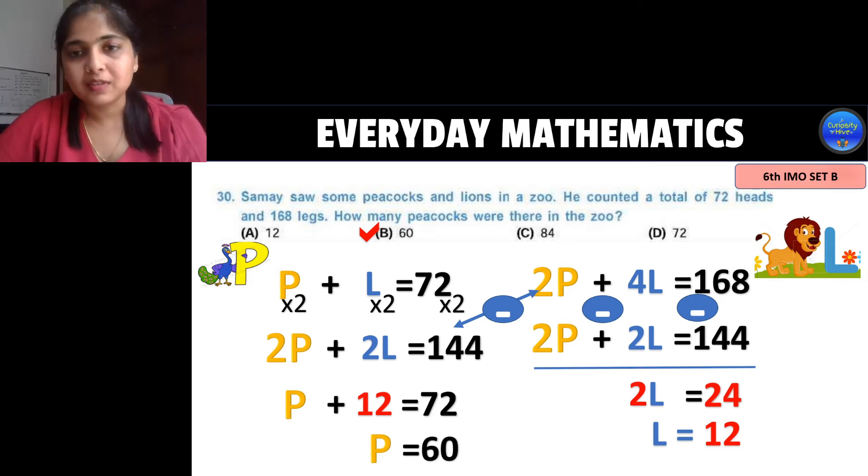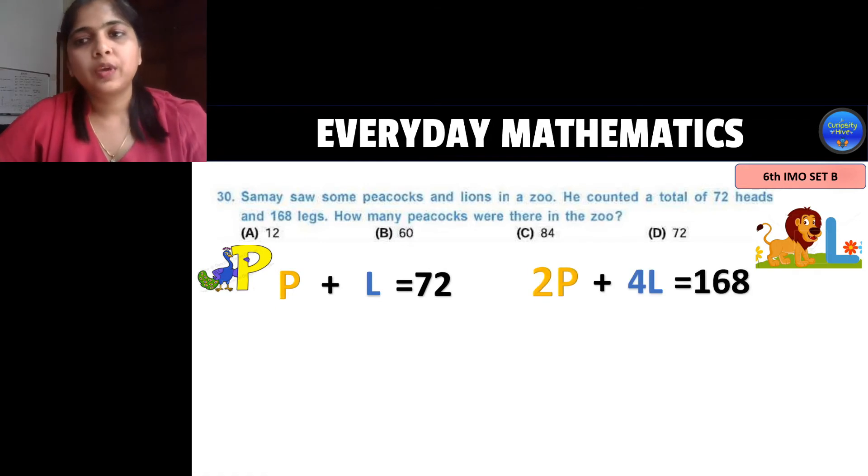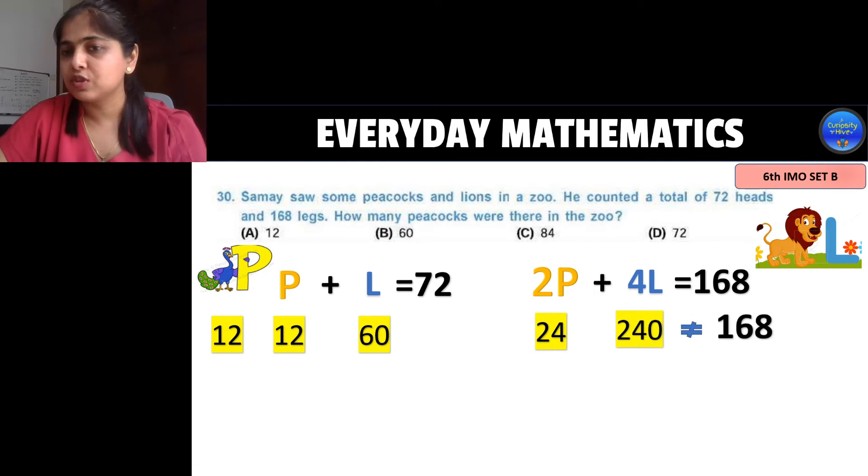Well the other way to solve this if you find this very heavy is here. So here we have our two equations which we understood by reading the question. Now all you need to do is replace it with the answers. Now option a has 12 so let's replace peacock with 12 hence we will get lion to be 60. Now let's replace these p and l values in this equation. So 2p is 24 and 4l is 4 times 60 which is 240 which is not equal to 168 when added together. So peacock is not 12 in number.